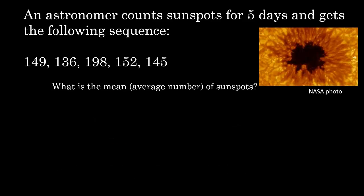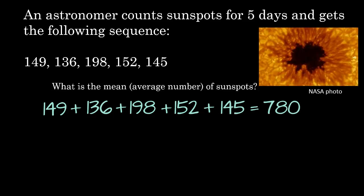What is the mean or average number of sunspots? For this one, we're actually going to add all of our numbers up first. So we're going to take 149, plus 136, plus 198, plus 152, plus 145. And it turns out it adds up to 780. The next job we have to do is divide 780 by the number of numbers we have. We're going to count: 1, 2, 3, 4, 5. We have 5 numbers. So we're going to take 780 divided by 5, and it turns out that our mean is 156.